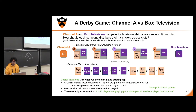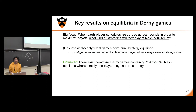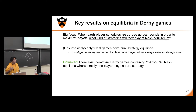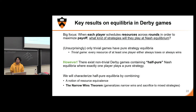This lets me move to our key results. Unsurprisingly, only trivial games have pure strategy equilibria. However, there exist some non-trivial Derby games that contain half-pure Nash equilibria — where exactly one player plays a pure strategy. This is really interesting because it means one of the two sides can completely disclose their strategy to their opponent and yet still do as well as if they had hidden it. We'll show how to characterize these half-pure equilibria by combining a notion of resource equivalence and our main technical hammer, the Narrow Wins Theorem, which generalizes narrow wins and sacrifice to mixed strategies.